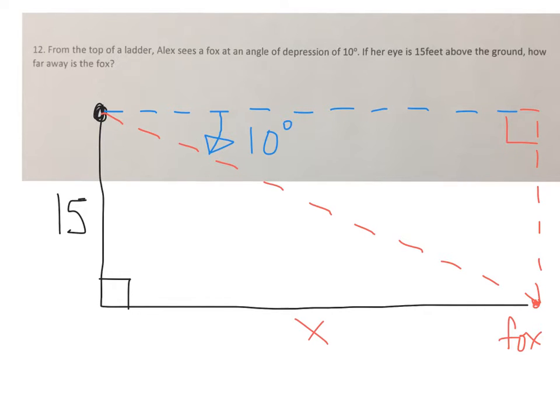So if we're looking for the distance she is away from the fox, that can be translated up there. And the height of the ladder can be translated over here. So we're using the triangle that you see floating in the sky.